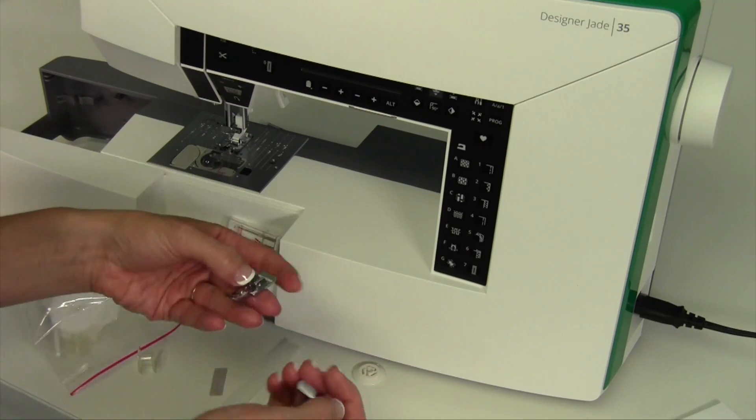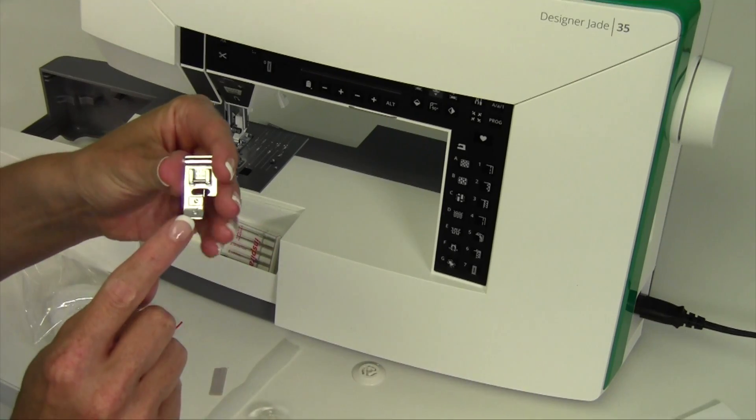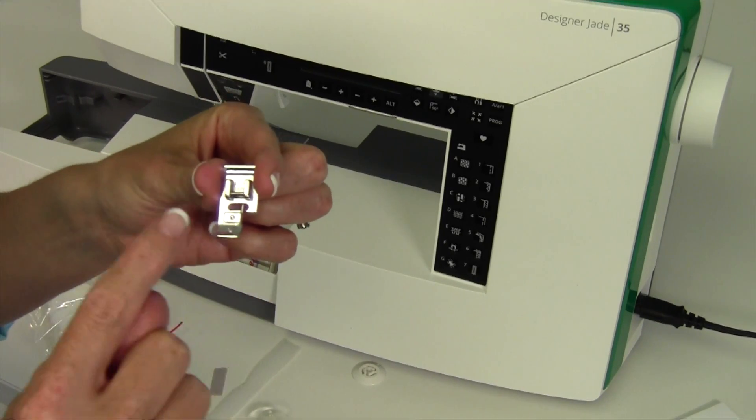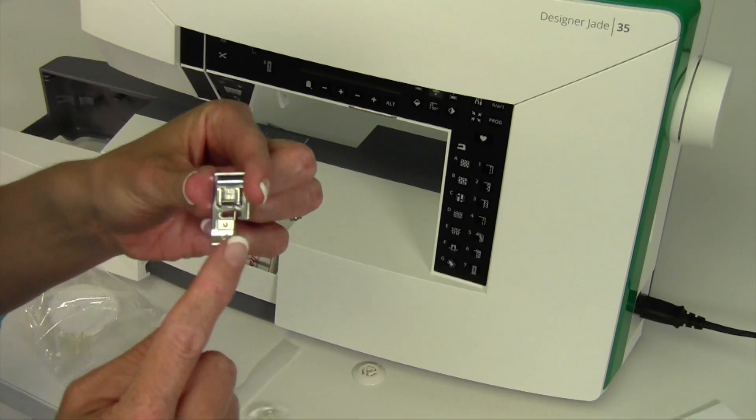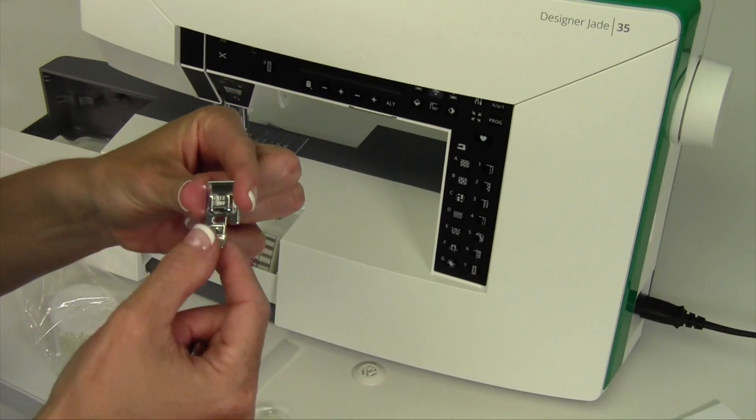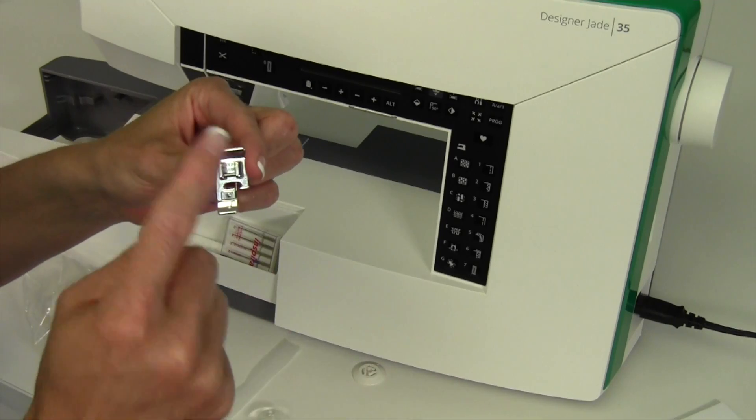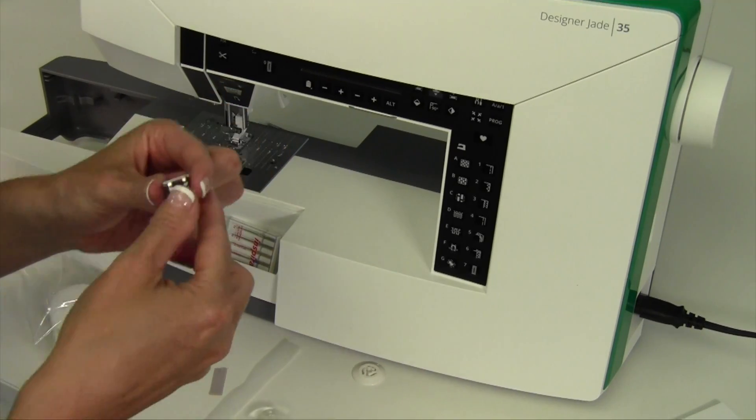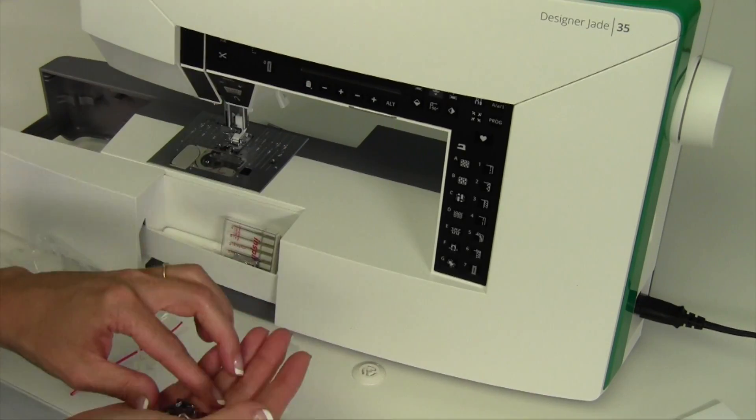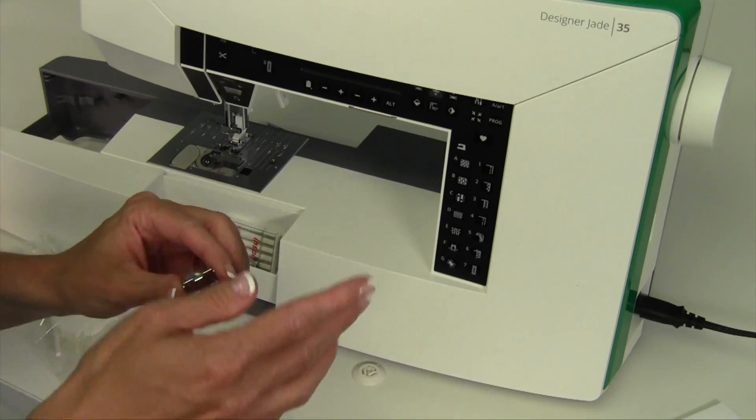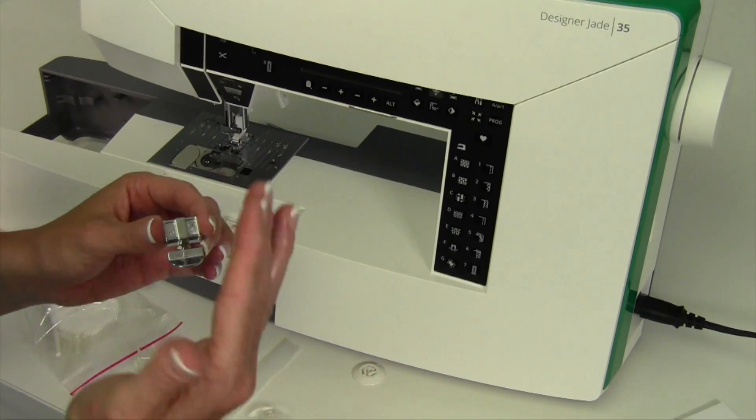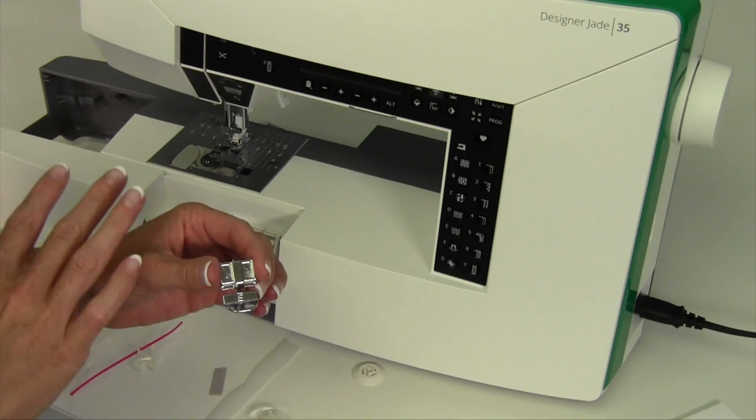Two more feet that come included with this machine. The J foot is an overlock foot so if you're stitching over the edge there's a little pin in there that will support the stitch and make it so if you don't have a serger that's the perfect stitch and foot to use. Your machine is actually going to tell you when to use these feet so as I show you where that is it will always guide you so you always have the right foot on for the stitch.